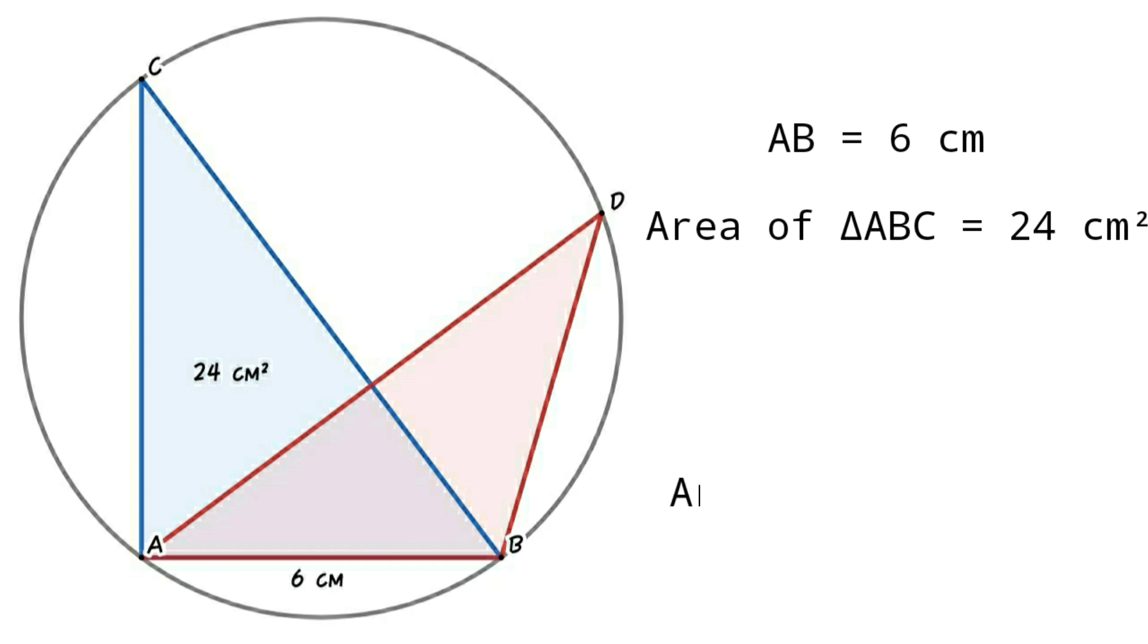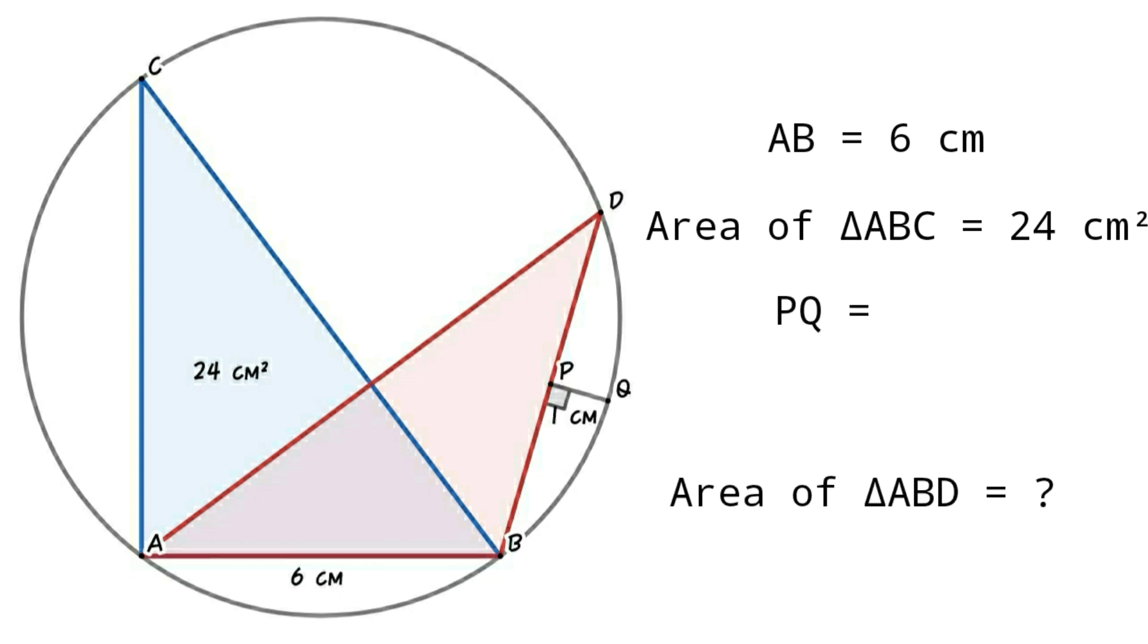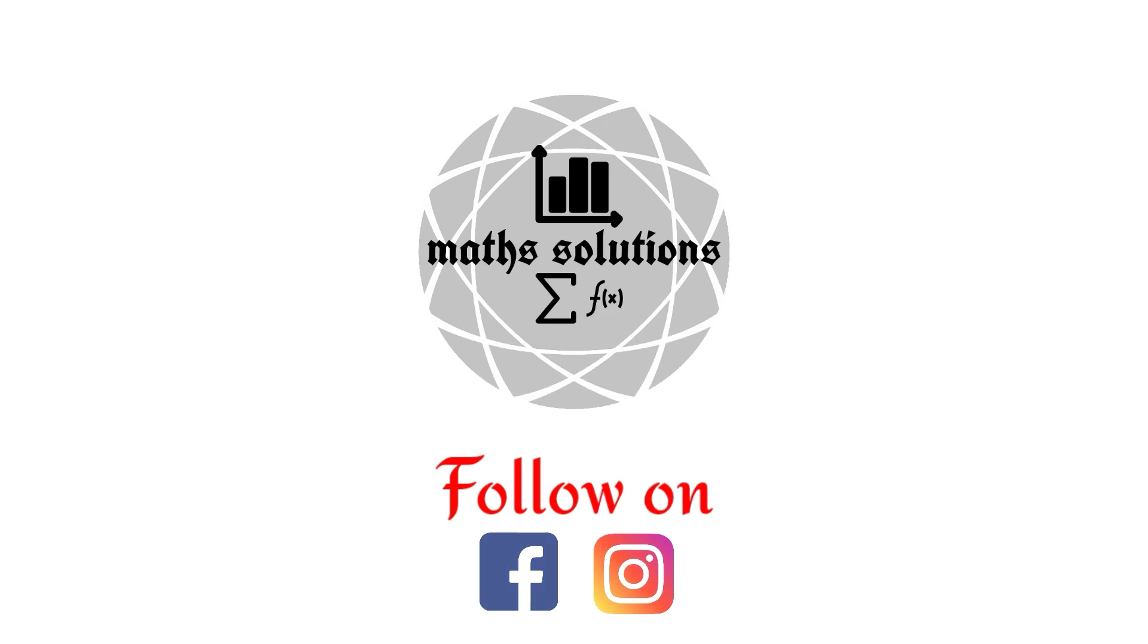Find the area of triangle ABD when PQ equals 1 centimeter, P is the midpoint of BD, and PQ is perpendicular to BD. Pause the video and try to solve this problem.